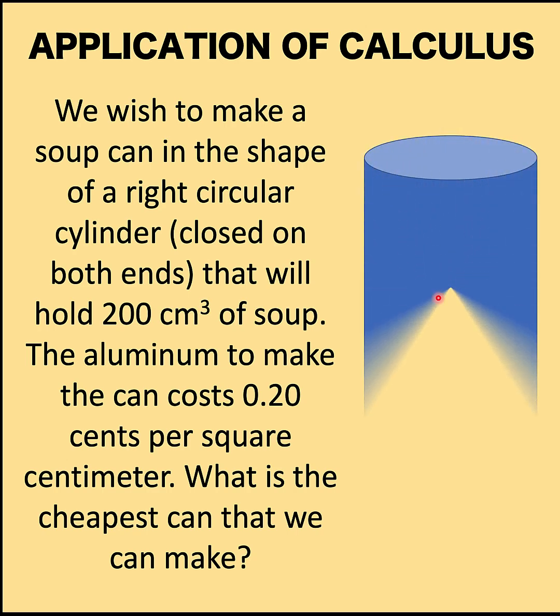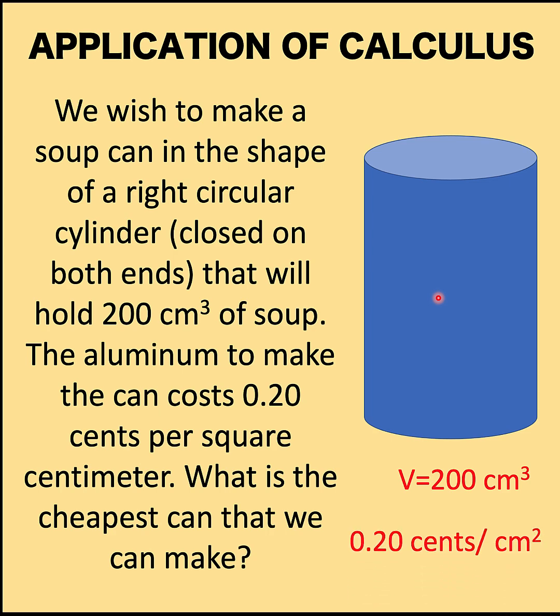Hi everyone, here's our math problem for today. Let's say we wish to make a soup can in the shape of a right circular cylinder closed on both ends that will hold 200 cubic centimeters of soup. The aluminum to make the can costs 0.20 cents per square centimeter. What is the cheapest can that we can make given this situation? You can pause the video and see if you can solve this math problem.